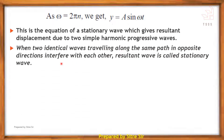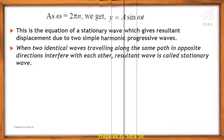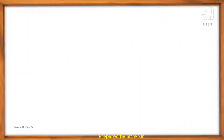When two identical waves traveling along the same path in opposite directions interfere with each other, the resultant wave is called a stationary wave. The next point is the condition for a node.